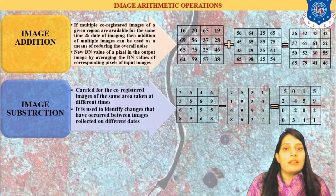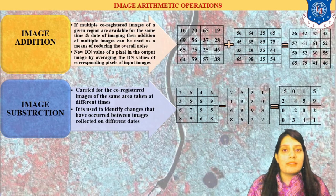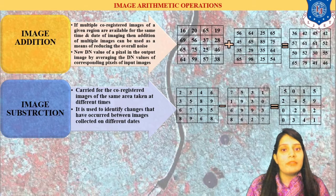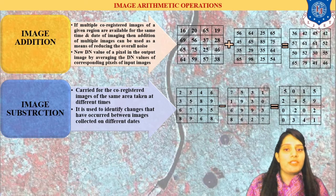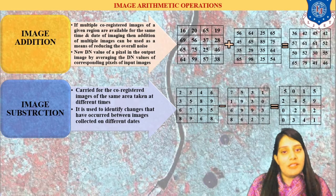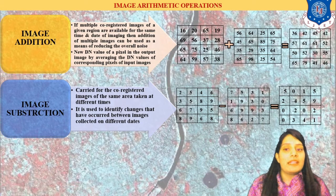Let us discuss image arithmetic operations. First, image addition: if I have a co-registered image with proper projections and the same date and time of data acquisition, addition of multiple images can be done. You can see the pixel values are averaged and a new image is formed — for example, 16 plus 56 divided by 2 gives 36. Image addition is possible only when the date and time of image acquisition is the same.